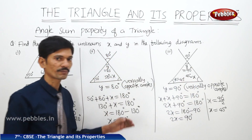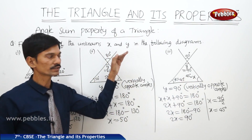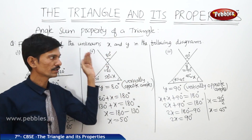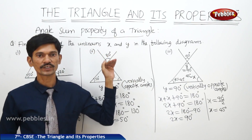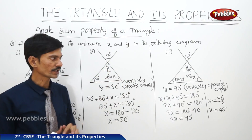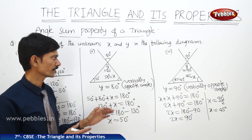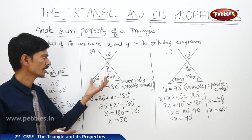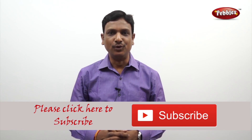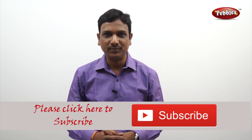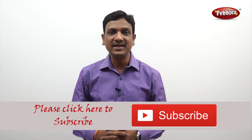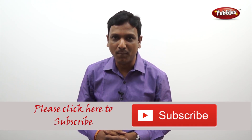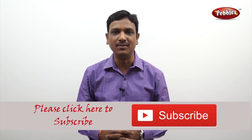Using the two properties — the exterior angle property and the angle sum property of a triangle — we can find the value of any unknown X or Y in a given figure. If you like this video, please give a thumbs up and subscribe to our channel to get more videos on the CBSE syllabus.